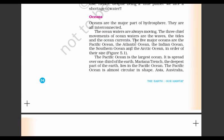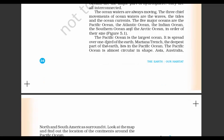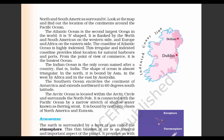There are five major oceans: Pacific, Atlantic, Indian, Southern and Arctic. The Pacific Ocean is the largest — it is one-third of the earth, and Mariana Trench, the deepest part of the earth, lies in it. The Pacific Ocean is almost circular in shape. The Atlantic Ocean is the second largest ocean in the world — it is S-shaped, and it is one of the major sources of trade and commerce. Most ships pass through the Atlantic Ocean to trade with European nations, African continents, Asia, America and South America.